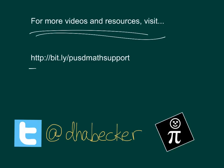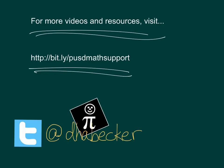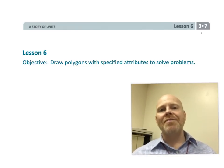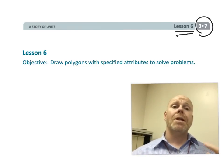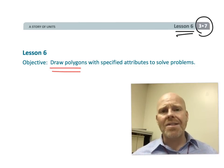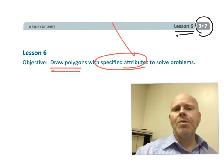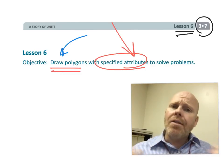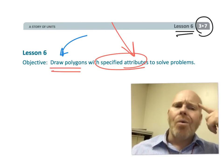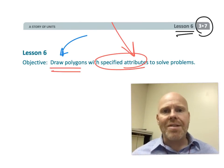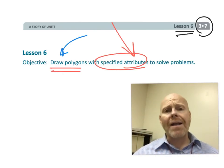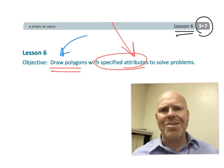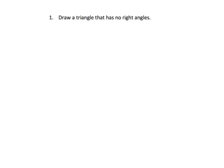This is third grade module 7 lesson 6. In this lesson, students are going to be practicing vocabulary by drawing polygons with given attributes. The point is not how well they can draw these figures — the point is really can they practice the geometry vocabulary words that they've been learning. So let's get started.